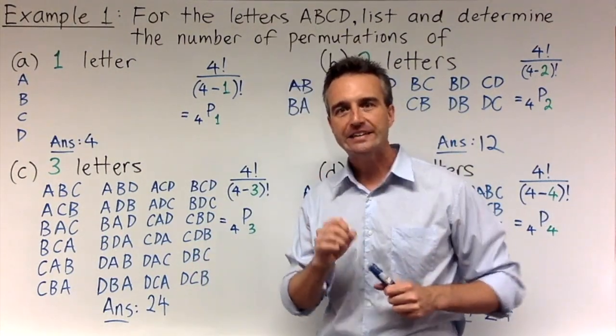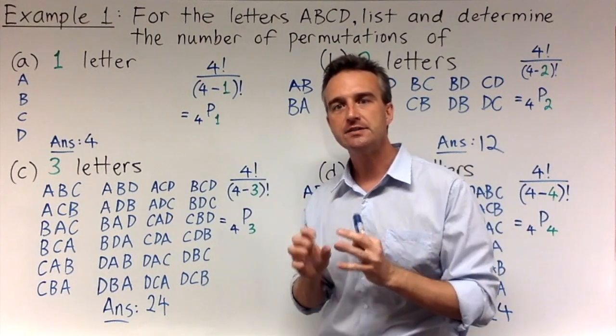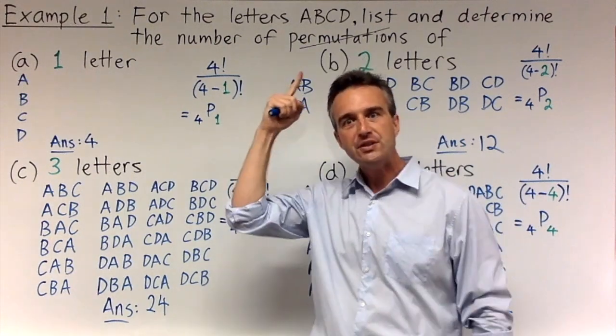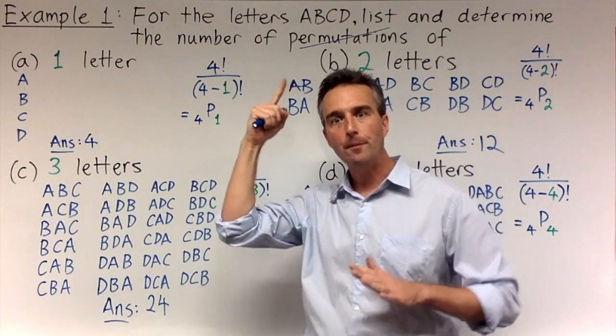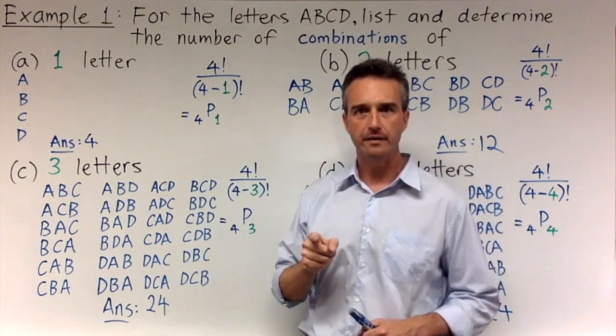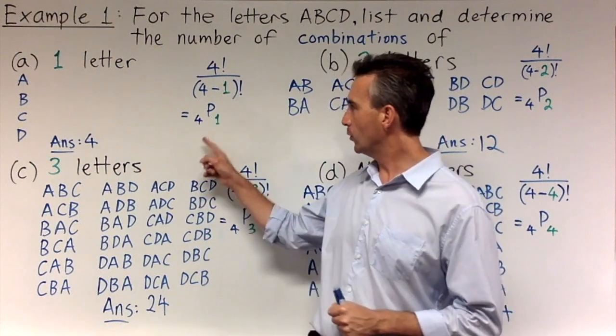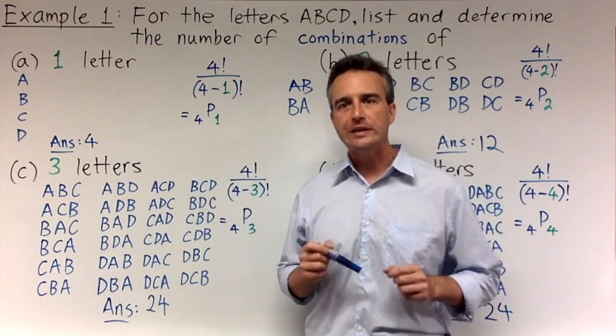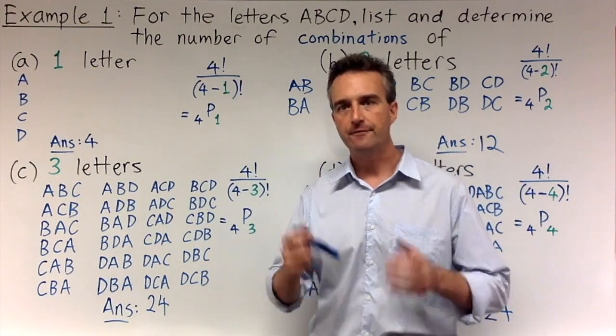In that video, we were looking at the number of permutations there are when we choose some of the letters from A, B, C, and D, and then arrange them in a row. But this time we are not doing permutations. I'm going to change this to combinations. But these answers are still the answers for the permutations. Remember, 4P1 and the P stands for permutation. So let's go through each of these and see if we can figure out how many combinations there are for each case.